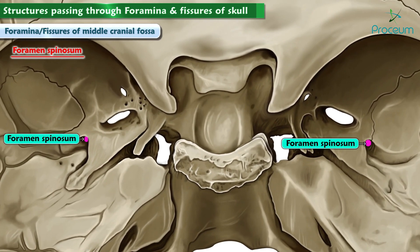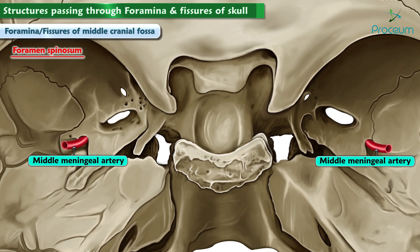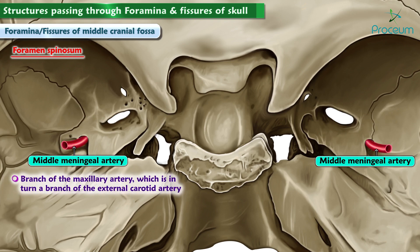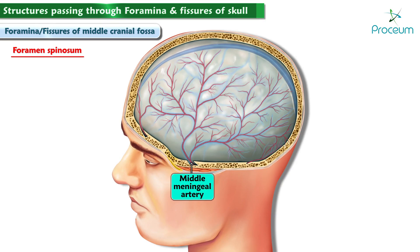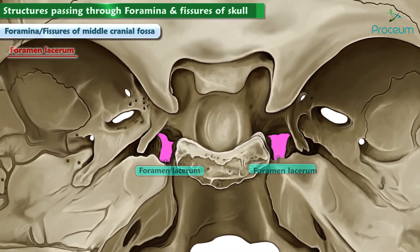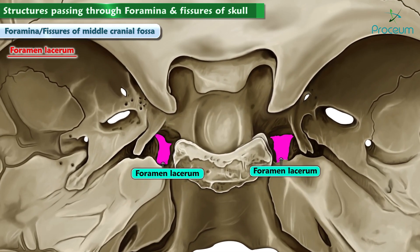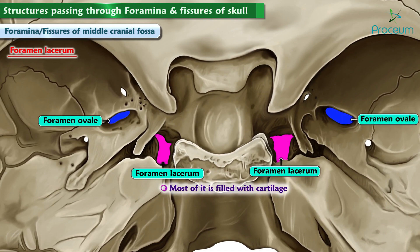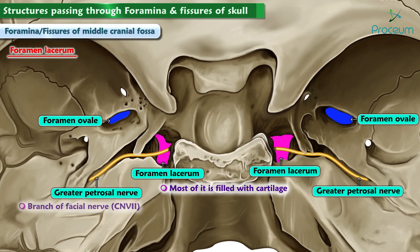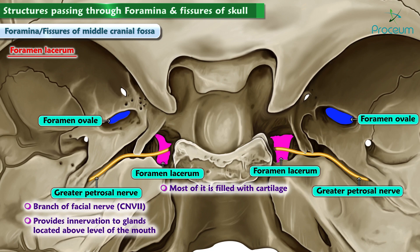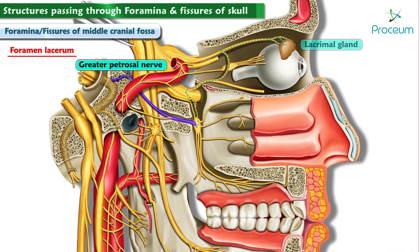The foramen spinosum lies posterior and lateral to the foramen ovale. It allows the middle meningeal artery to enter the skull. The middle meningeal artery is a branch of the maxillary artery, which is a branch of the external carotid artery, and it supplies blood to the dura mater surrounding the brain. The foramen lacerum is located posterior and medial to the foramen ovale. Most of it is filled with cartilage, but it still allows passage of the greater petrosal nerve, a branch of the seventh cranial nerve, the facial nerve, which provides innervation to glands above the level of the mouth such as the lacrimal glands near the eye, associated with tear production.